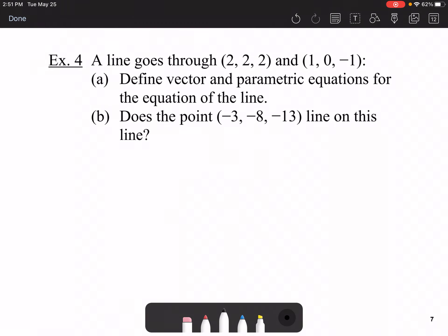There are other formats of lines that some tutors may go over with you or you may see online, but we're only investigating vector, parametric, and possibly scalar. A line goes through (2, 2, 2) and (1, 0, -1). Define vector and parametric equations for this line, then determine if the point (-3, -8, -13) lies on this line. We need a direction. Subtract one vector from the other. Then you can write your vector form and your parametric equations.